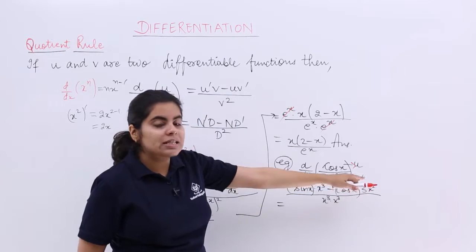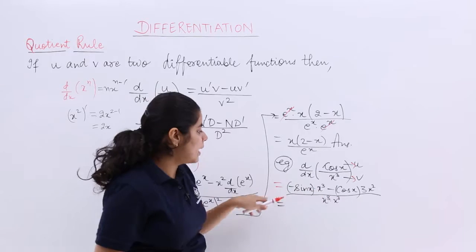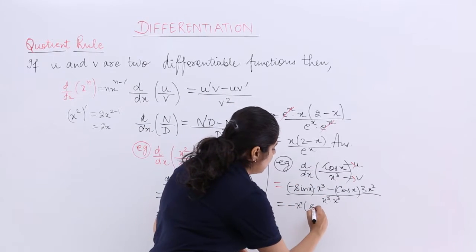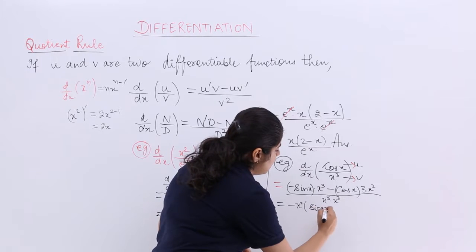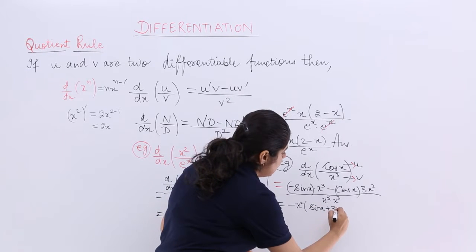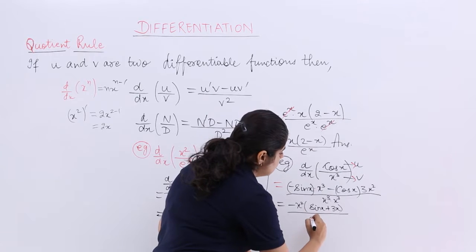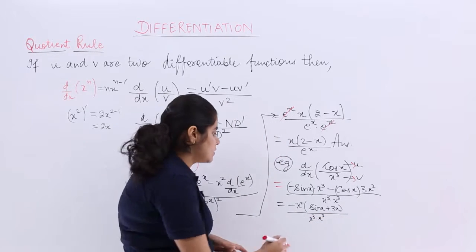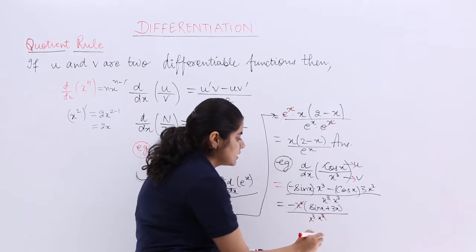In the numerator, see certain things can come out to be common. Minus sin x square if you take common. Inside you have sin x plus 3x. Denominator is x cube multiplied by x cube. See if certain things cancels, x square cancels with this.